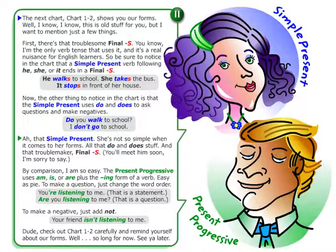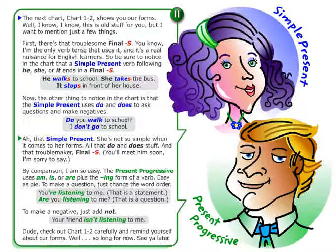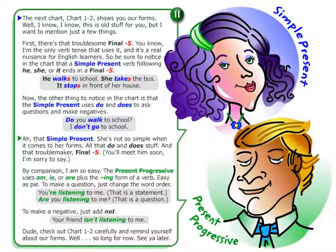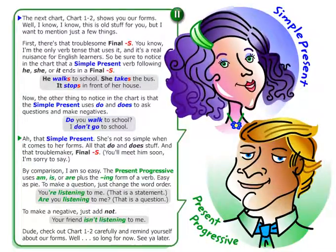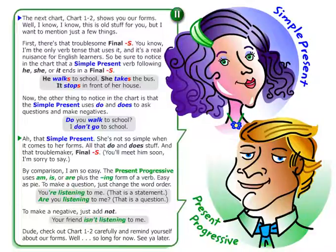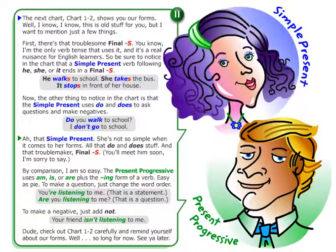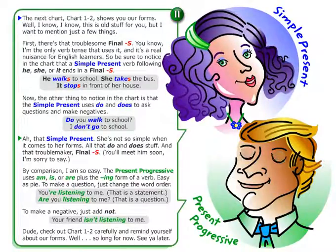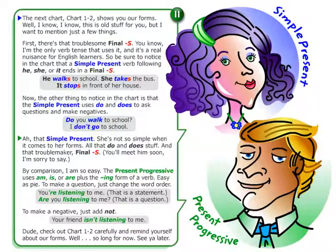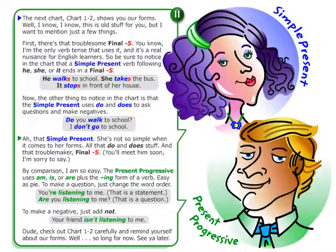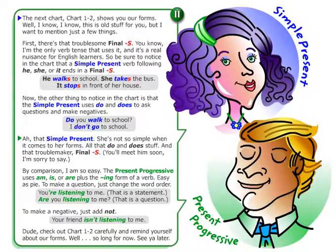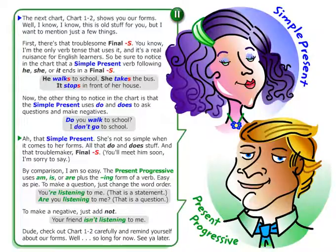First, there's that troublesome final S. I'm the only verb tense that uses it, and it's a real nuisance for English learners. Be sure to notice in the chart that a simple present verb following he, she, or it ends in a final S. He walks to school. She takes the bus. It stops in front of her house.